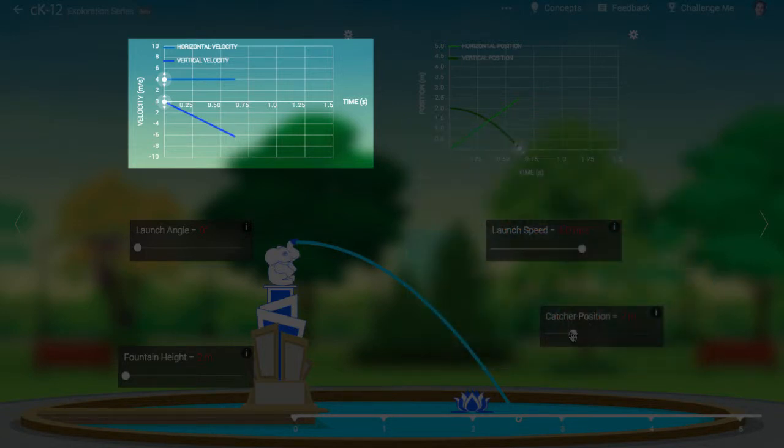So the velocity versus time graph for the horizontal component of velocity is flat. The area bounded by this graph is rectangular. The area of this rectangle is equal to the distance horizontally traveled by the water drops. This should equal the position we place the catcher.